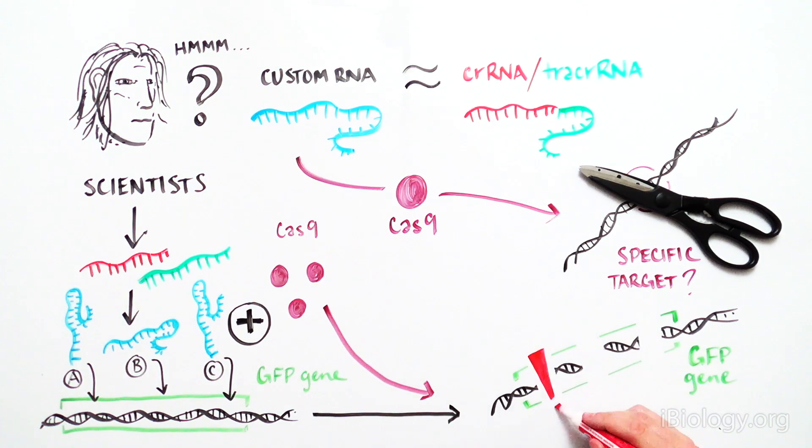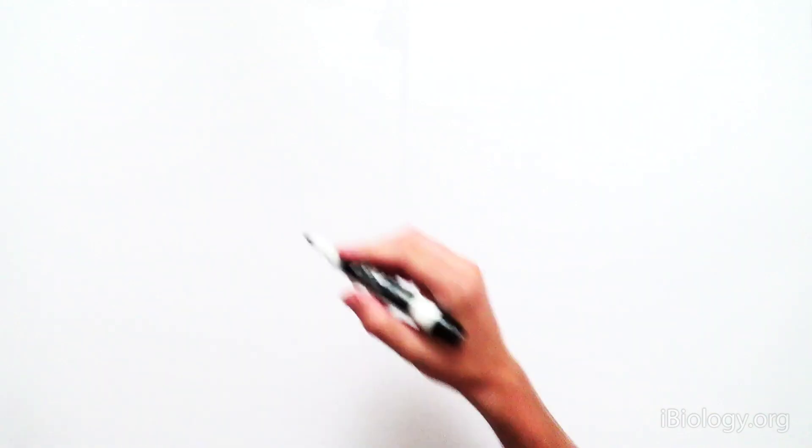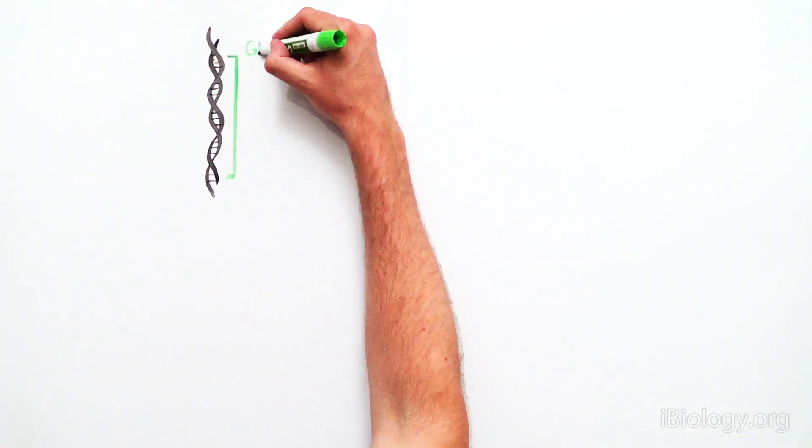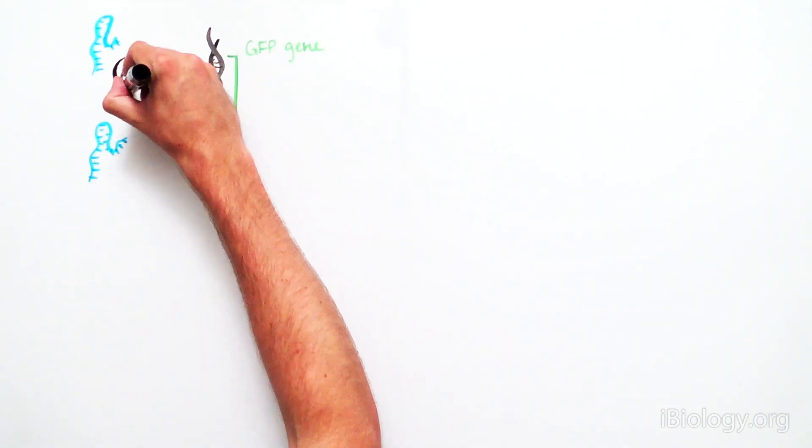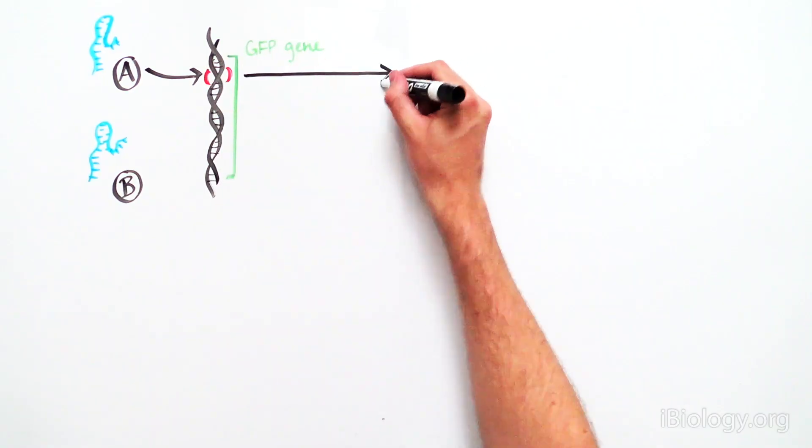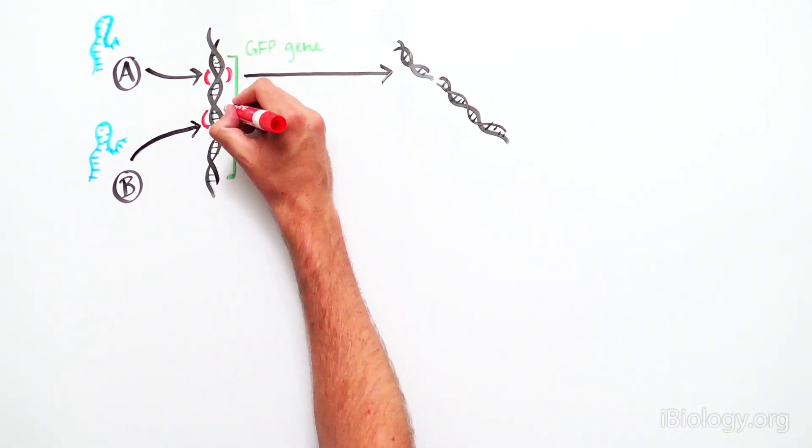And it did! When the RNA molecules were designed to bind to different regions of the GFP sequence, the GFP DNA sequence was cleaved at that specific location.